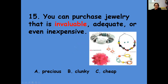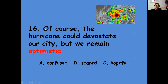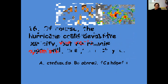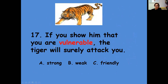You can purchase jewelry that is invaluable — remember, we break our word apart; this one is giving us some Greek and Latin roots. So 'in' means not — is the jewelry not valuable, adequate, or even inexpensive? So what type of jewelry are you buying — precious, clunky, or cheap? Number sixteen: the hurricane could devastate our city, but we remain optimistic — confused, scared, or hopeful? Number seventeen: if you showed him that you are vulnerable, the tiger will surely attack you. Does 'vulnerable' mean showing that you're strong, weak, or friendly?